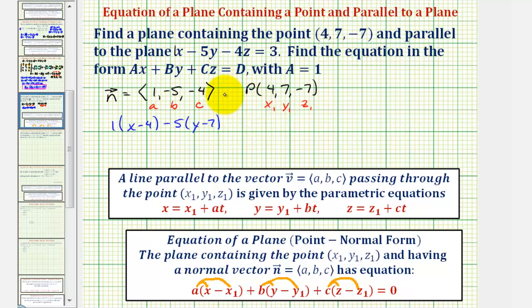and then plus c, but c is negative, so -4 times (z - (-7)), which becomes (z + 7), equals zero.